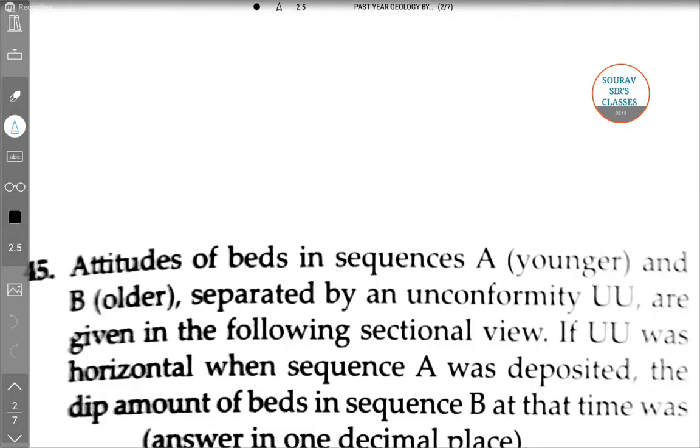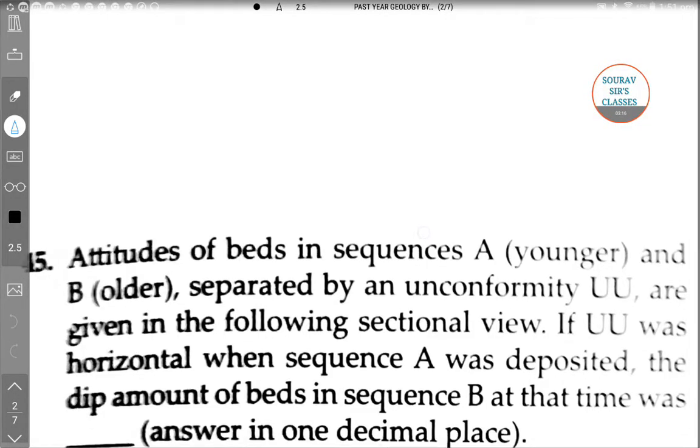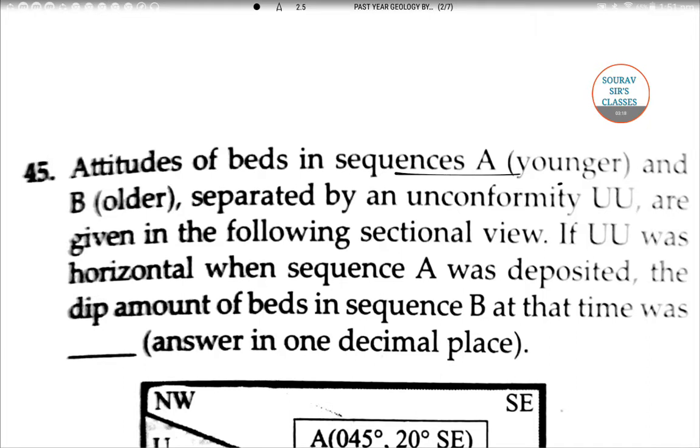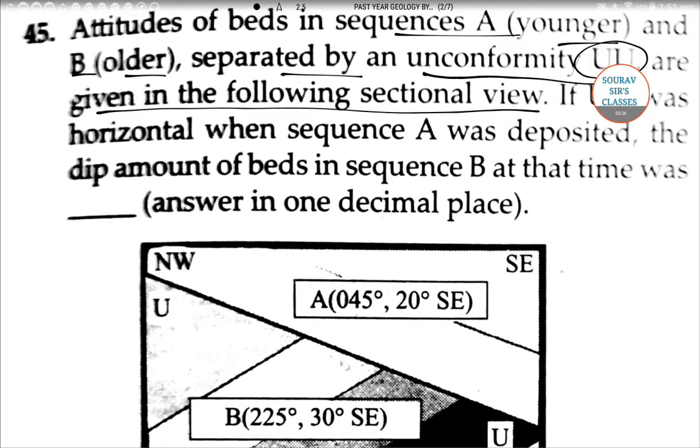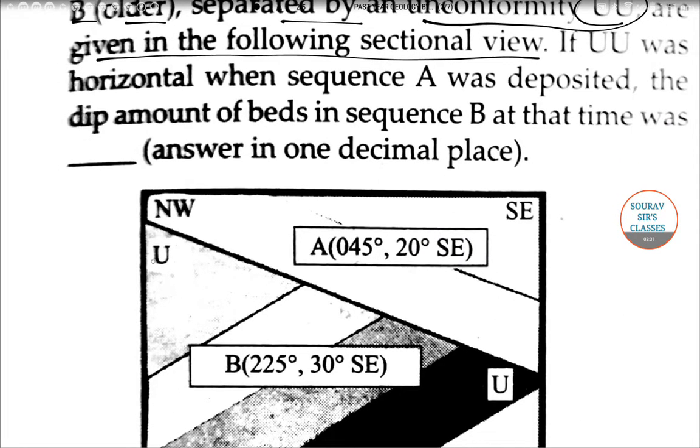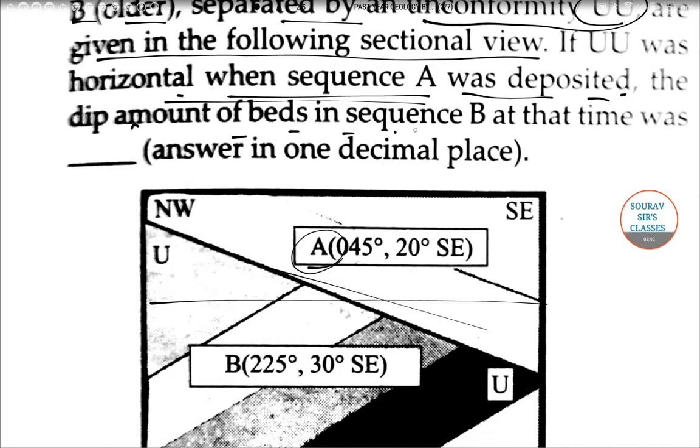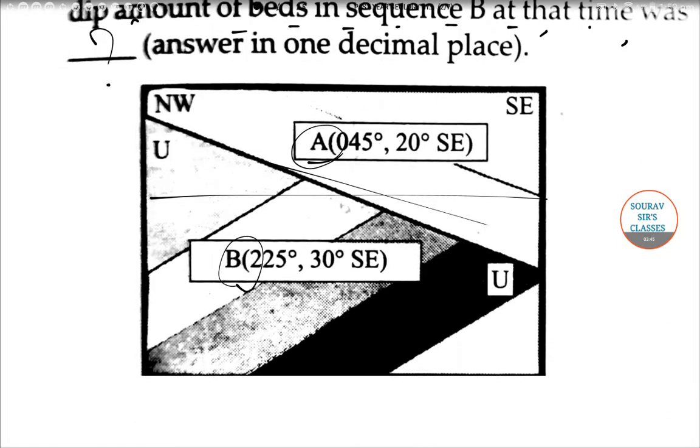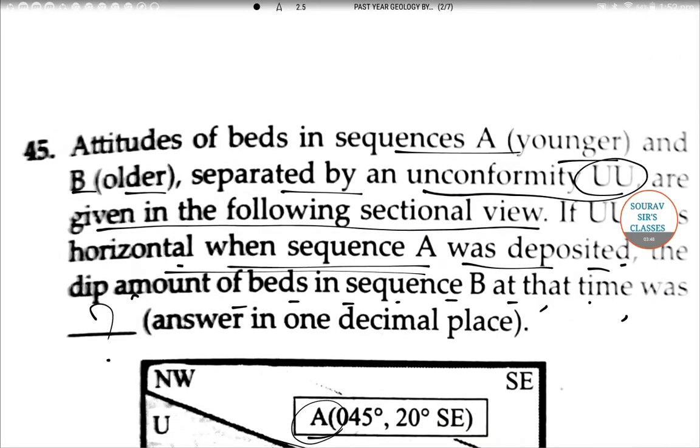Next question: Attitudes of beds in sequences A (younger) and B (older) separated by an unconformity UU are given in the following sectional view. If UU was horizontal when sequence A was deposited, the dip amount of beds in sequence B at the time was dash. Answer in one decimal place.